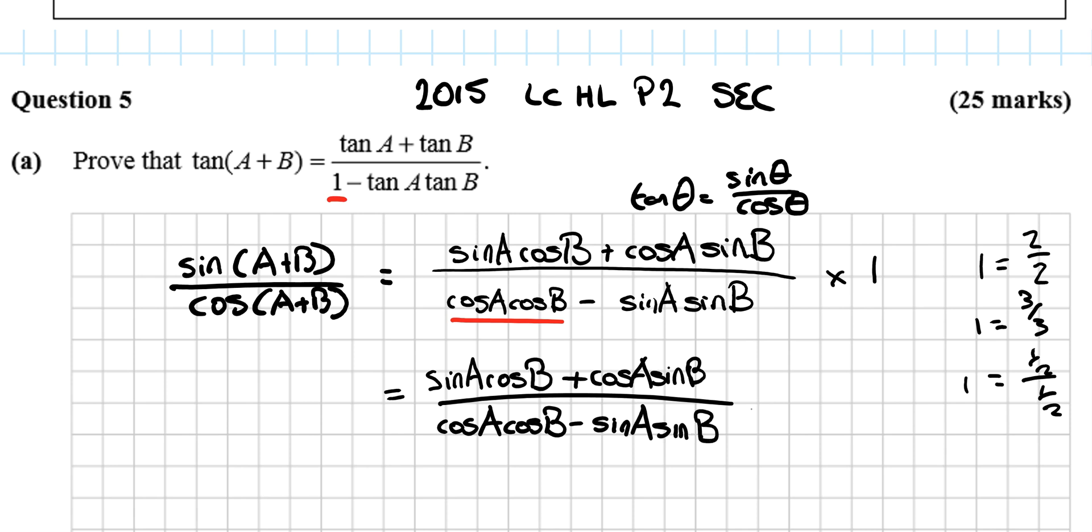So I do that: sin(A)cos(B) + cos(A)sin(B) all over cos(A)cos(B) minus sin(A)sin(B), and I'm going to multiply it on the top line by a fraction that's cos(A)cos(B), one over another fraction cos(A)cos(B).